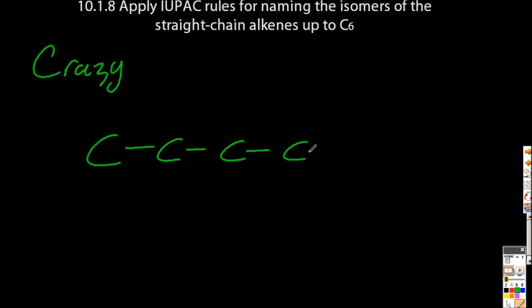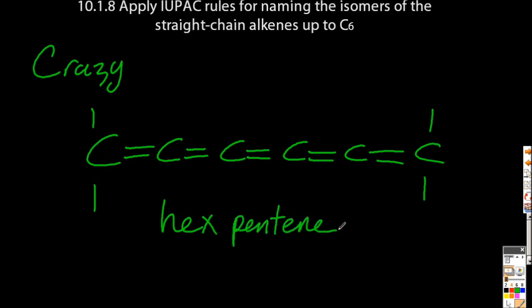And let's look at one crazy one while we're here. This has six carbons, so it must be hex. Lots of double bonds, so it must be ene. And you know, there's five double bonds, so it's hex-pentene. And you don't need the numbers, because there's only five places for double bonds to go.